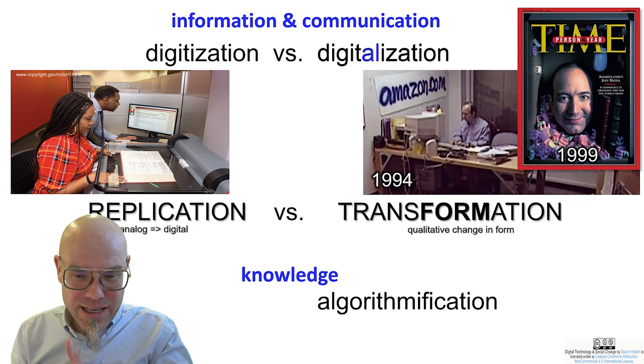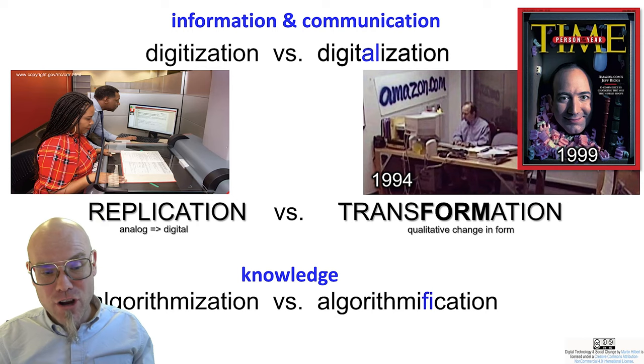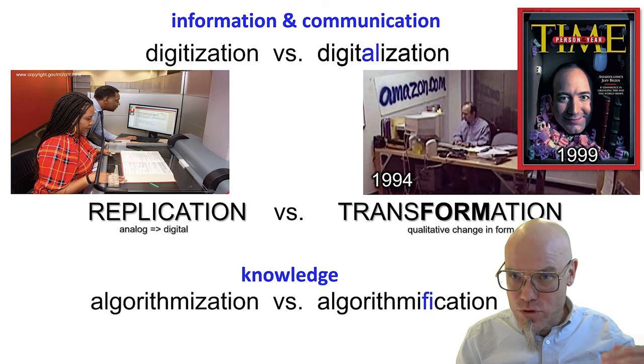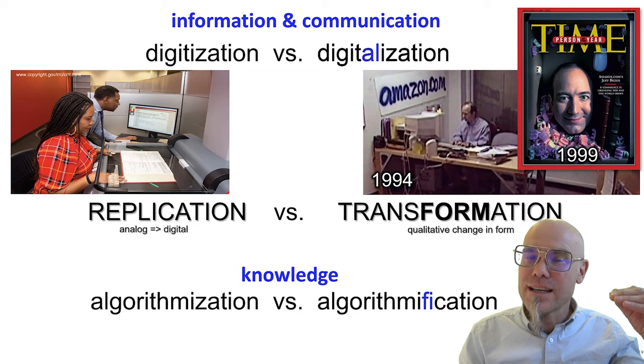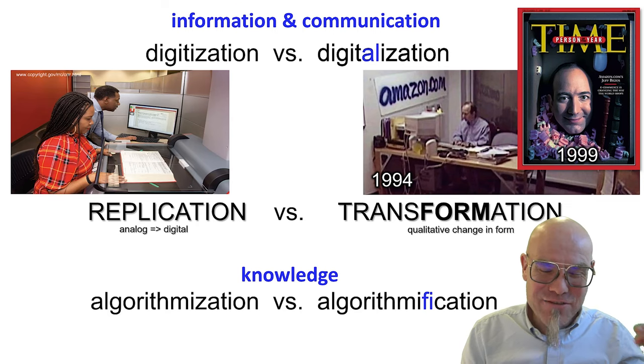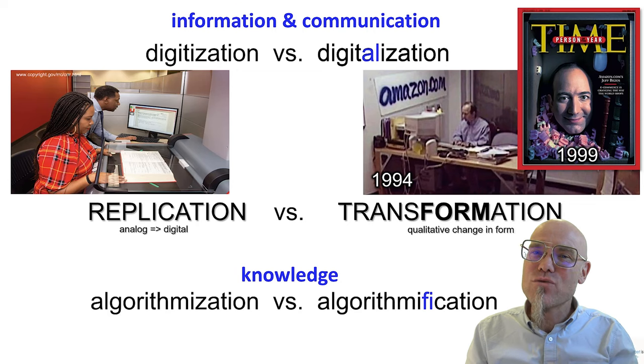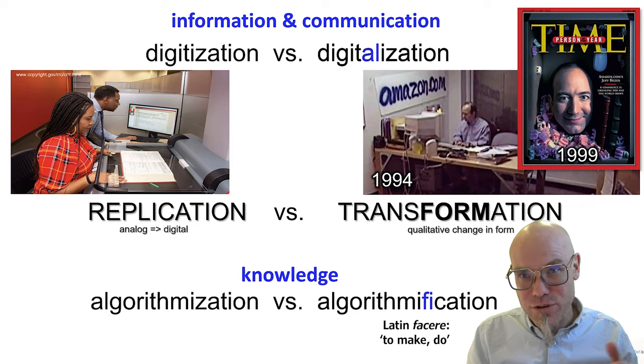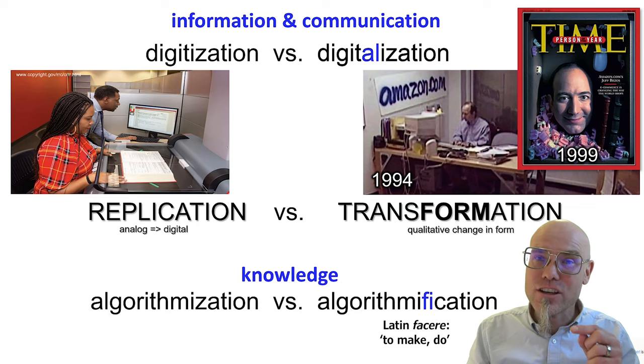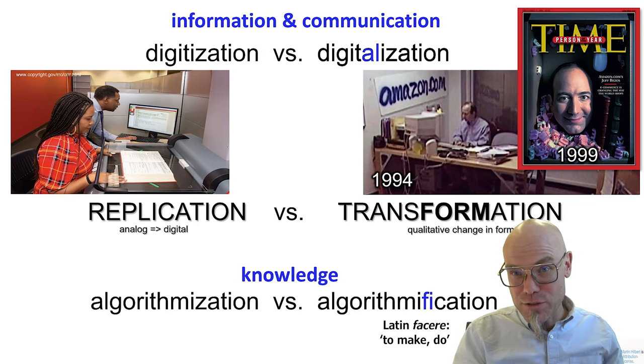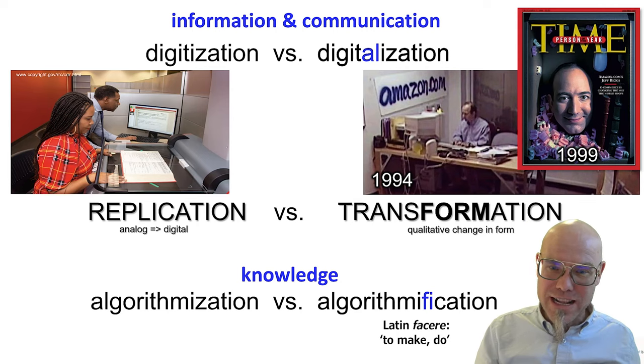Something similar happens with algorithmification and its opposite, algorithmization. In algorithmization, I basically take a process, a recipe that involves knowledge, and I algorithmize it. That is different from when I algorithmify it. The -fication comes from facere in Latin, also in Portuguese, que vai fazer. Facere is to make, to do. So you transform it. That has to do with transforming knowledge processes, with algorithms. Let's have a look at what algorithms are.